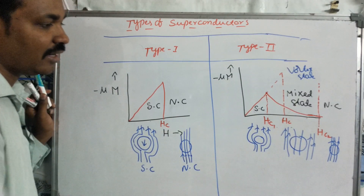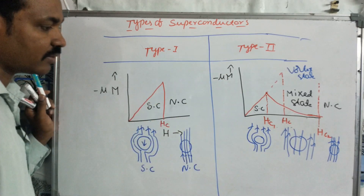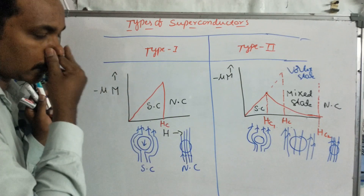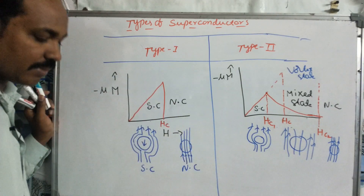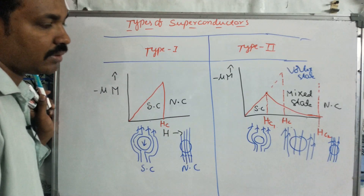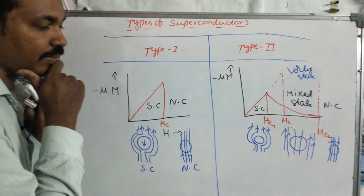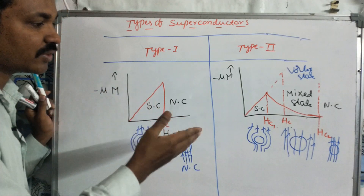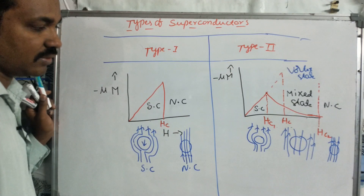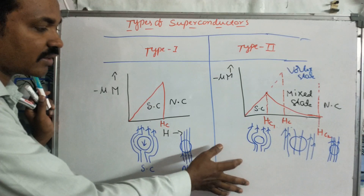Type 2 superconductors are used in MRI scans, NMR, and Particle Accelerators. There is a lot of ongoing research on Type 2 superconductors due to their wide range of applications.